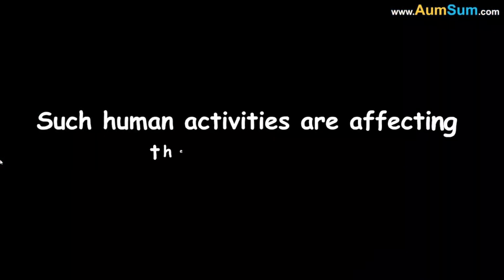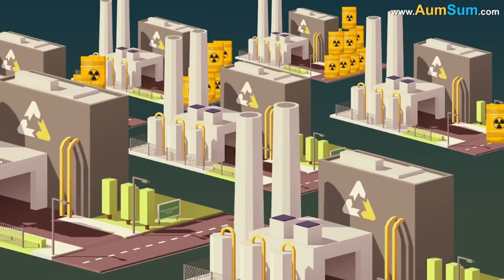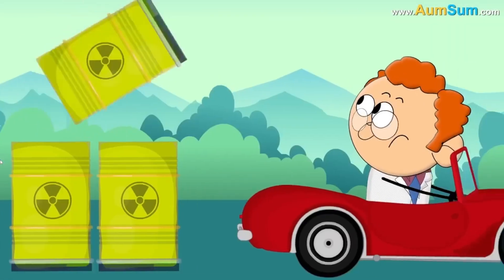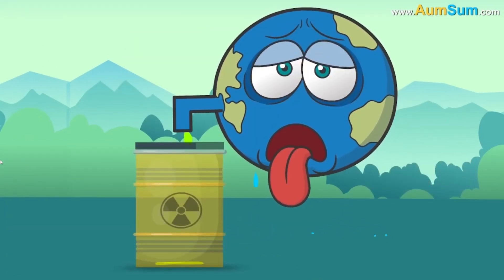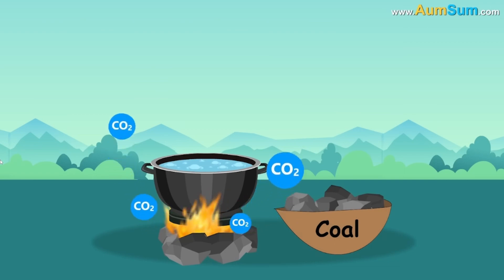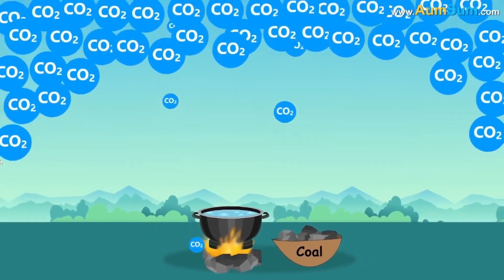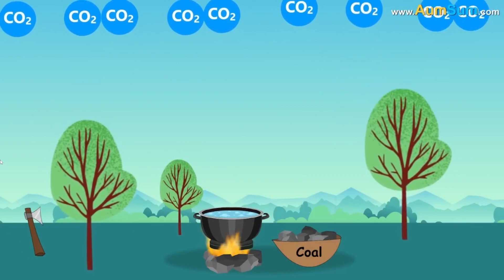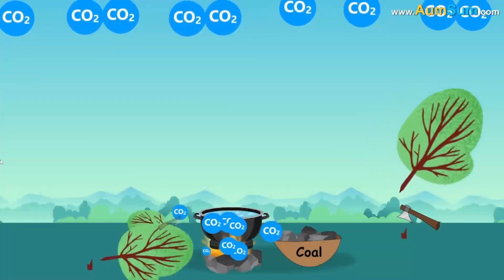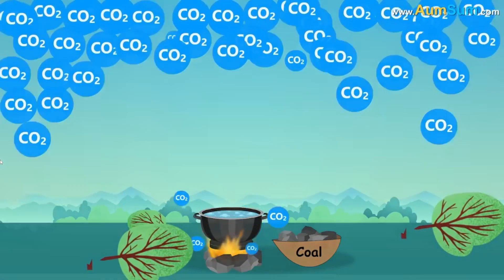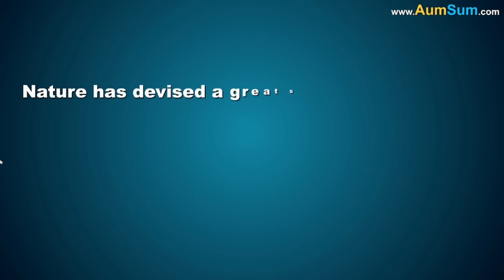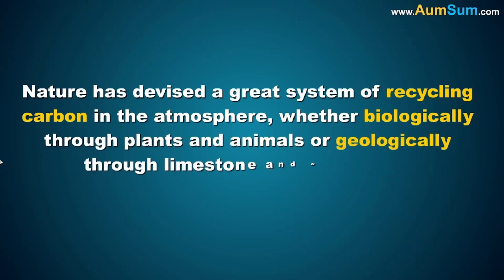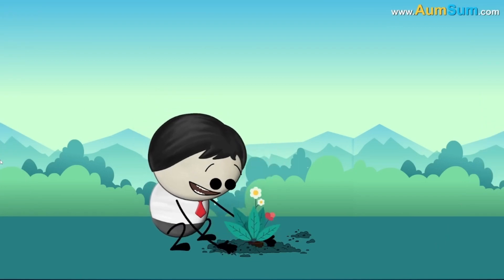Such human activities are affecting the carbon cycle. Due to the industrial revolution, the demand for fossil fuels has risen globally. Fossil fuels are being used up much faster than they can be naturally formed. Also, as burning of fossil fuels releases carbon dioxide, it has led to elevated levels of carbon dioxide in the atmosphere. Large-scale deforestation has further contributed to the increase in atmospheric carbon dioxide. Overall, nature has devised a great system of recycling carbon — whether biologically through plants and animals, or geologically through limestone and weathering — and it is now our responsibility to maintain it.